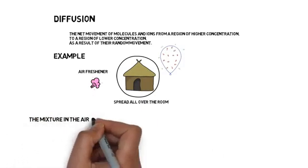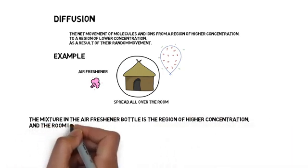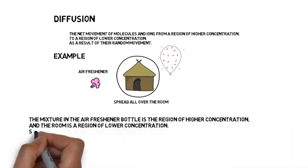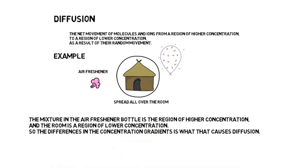The mixture in the air freshener bottle is a region of higher concentration and the room is a region of lower concentration. So the differences in the concentration gradients is what causes diffusion.